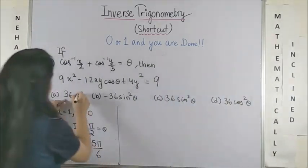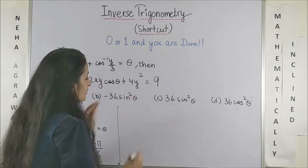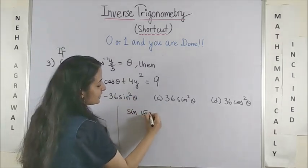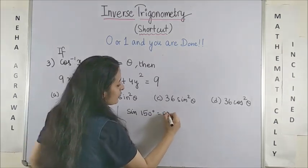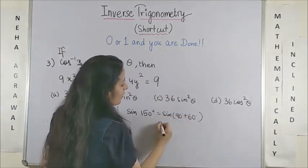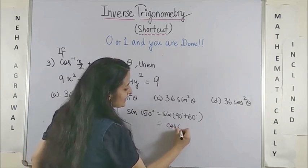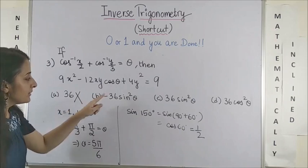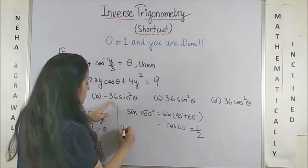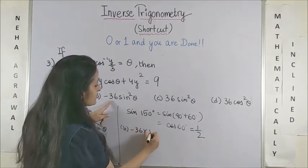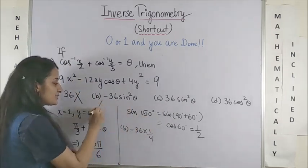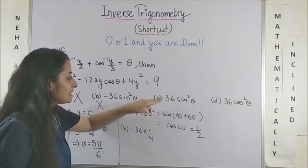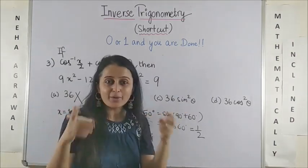So for that, certainly it's not 36. Now coming to sin of 5 pi by 6 or 150 degrees, this is sin of 90 plus 60 or I can also call it as cos 60 degrees which we all know is half. So B option gives us minus 36 into 1 by 4. That's minus 9. So incorrect. 36 sin square theta would be 36 into 1 by 4.